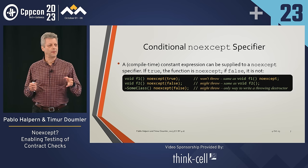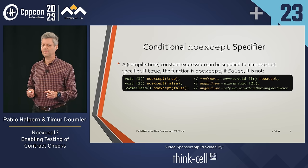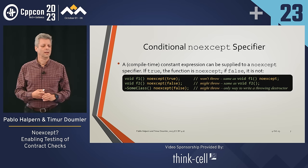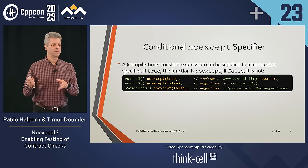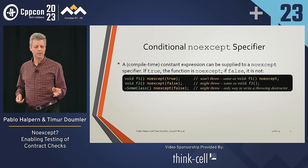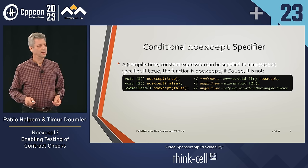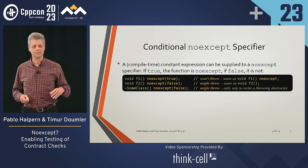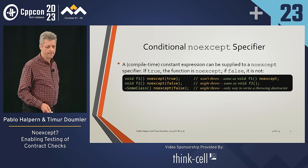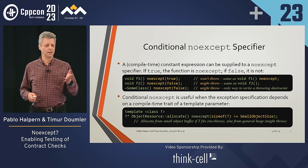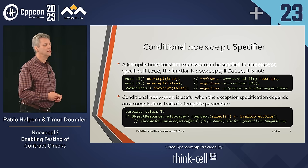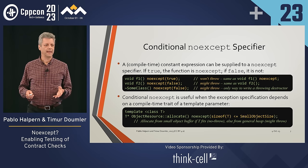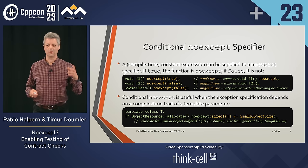noexcept can be conditional — a compile-time constant can tell you whether a function is noexcept or not. F1 is noexcept(true) so it will not throw; F2 is noexcept(false) so it might throw. This is typically used in generic template code to decide whether a function might throw based on a compile-time attribute of a template parameter. For example, an allocate function might be noexcept when the size of T is less than the small object size, but allow throwing when going to the heap where bad_alloc might occur.